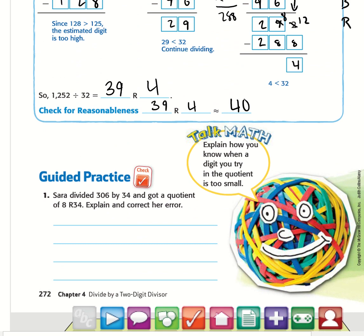Here's the guided practice. Sarah divided 306 by 34 and got a quotient of 8 remainder 34. Explain and correct her error. Go ahead and do that, and I'll get back with you.